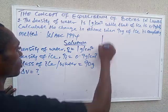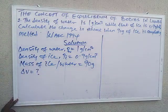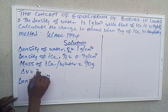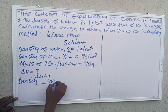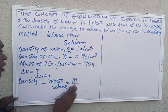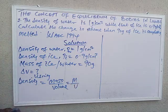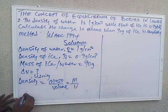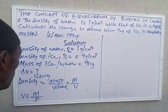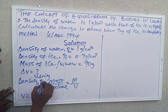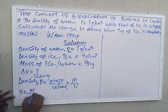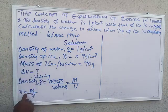Looking at this question critically, we observe there is a relationship between mass, density, and volume. The relationship is: density is equal to mass over volume, that is ρ = m/V. So if we are looking for volume, the formula becomes: volume equals mass over density, V = m/ρ.